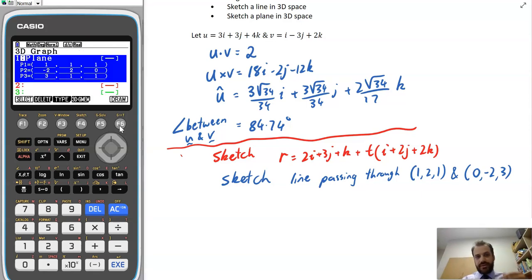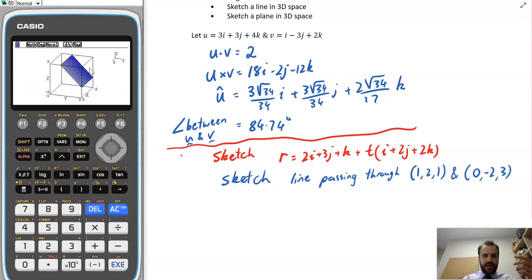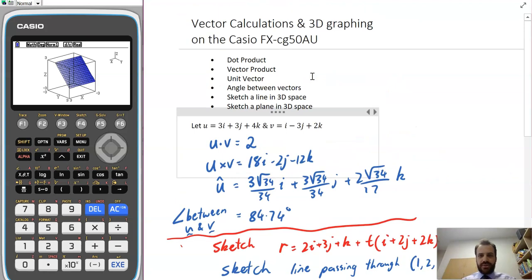Three points. I click set. I click draw. And I get an equation of a plane. And I can kind of rotate that around and look at it and get a sense of what that looks like. All right. That's some neat stuff that you can do on your Casio when it comes to vectors in 3D space.